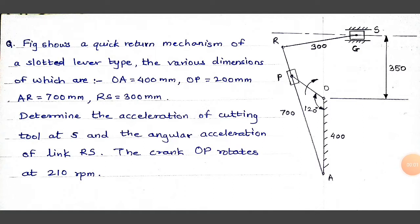Problem Statement: Figure shows a quick return mechanism of a slotted lever type. The various dimensions are OA = 400 mm, OP = 200 mm, AR = 700 mm, RS = 300 mm. Determine the acceleration of the cutting tool at S and the angular acceleration of link RS. The crank OP rotates at 210 rpm in the clockwise direction, and the line of stroke of slider S is 350 mm above point O.